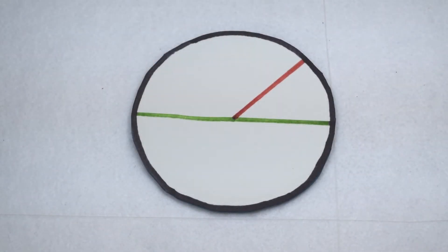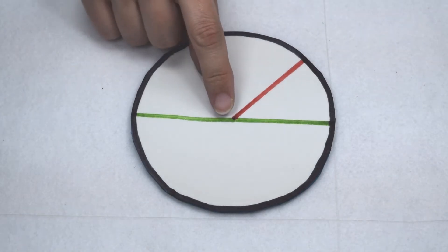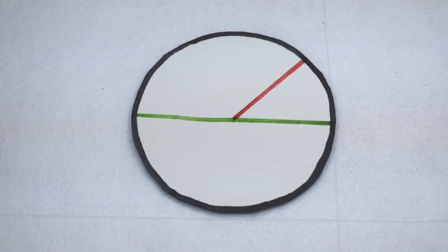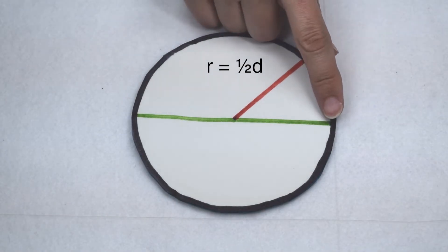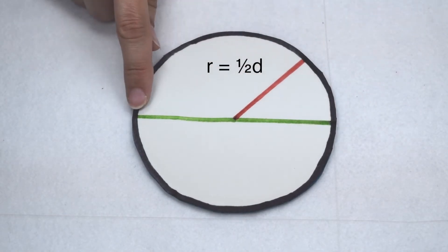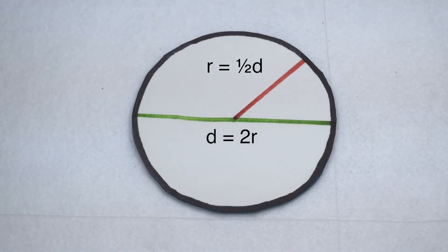There is a special relationship between the circle's radius and the circle's diameter. Since the radius measures from the center to the outside edge of the circle, we can say that the radius is worth half the diameter. So, radius is diameter divided by two, or radius is one half times diameter. The diameter measures from one edge through the middle to the opposite edge, so we could say it's worth twice the radius, or diameter equals two times radius.